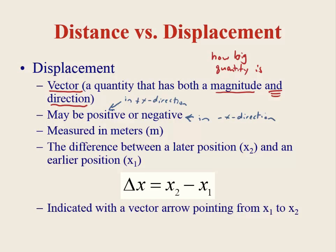Displacement is the difference between a later position x2 and an earlier position x1. We don't care how the object moved from x1 to x2 — all we care about are those two points. One of the ways we describe displacement is with a vector represented by an arrow. The length of the arrow represents the magnitude of the vector, and the direction the arrow points represents the direction of the vector.